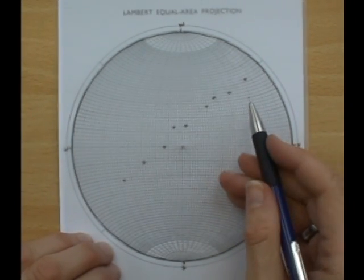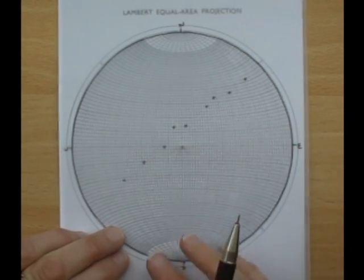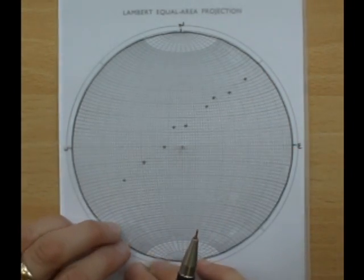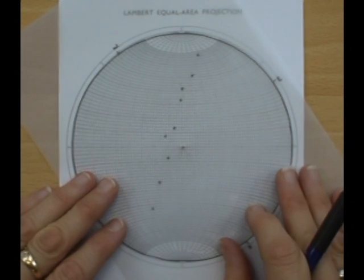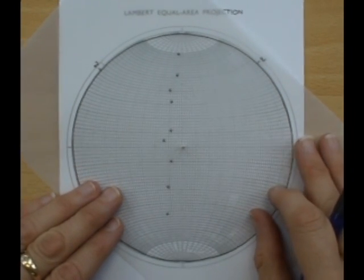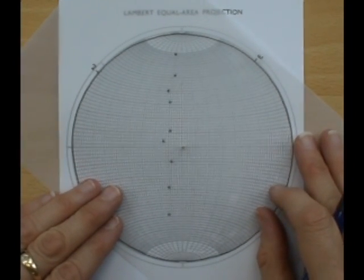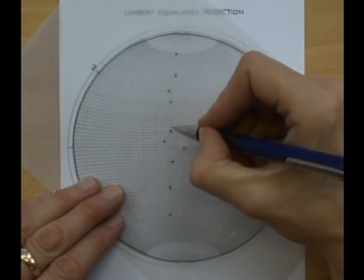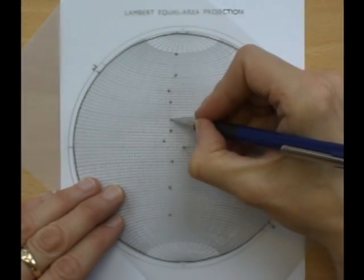The first thing we need to do is find the best fit great circle for these poles. We do this by rotating them round until we find a great circle that the majority of poles lie on or close to. I'm drawing in this circle.